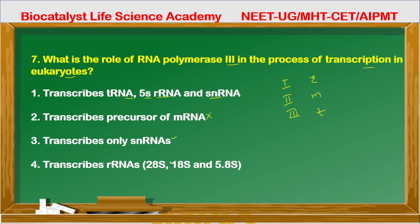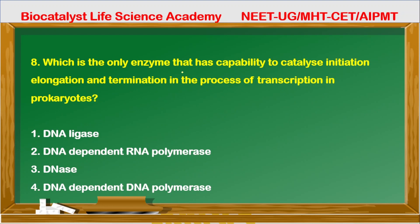The option 'transcribes rRNA 28S, 18S, and 5.8S' is also not the correct answer for RNA polymerase III. Question 8: Which enzyme has the capability to catalyze initiation, elongation, and termination in transcription? DNA ligase is incorrect — it ligates DNA fragments. DNA-dependent DNA polymerase works in replication. The correct answer is DNA-dependent RNA polymerase — option number 2.